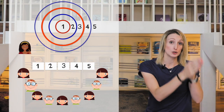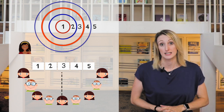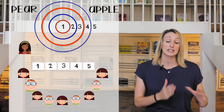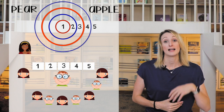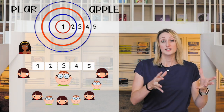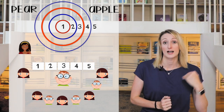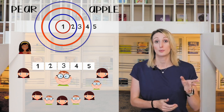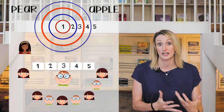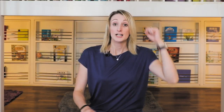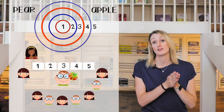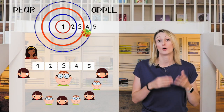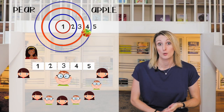Next, split the class into two teams and give them fun team names. The teams are then going to take it in turns one by one to come to the front and throw the sticky ball at the target. It's really important to keep the whole class engaged, so as one student is at the front throwing the ball you can have the rest of the class chant some encouragement — for example: Jimmy Jimmy throw the ball, Jimmy Jimmy throw the ball.